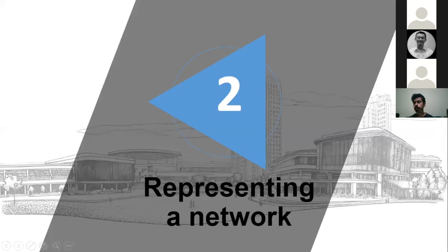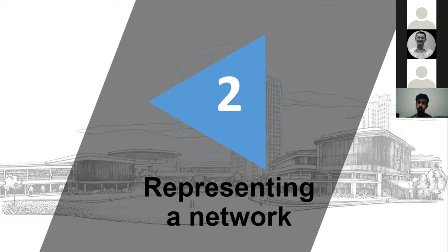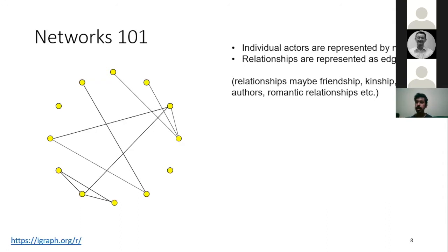Now let me quickly run through some basics of how you think about networks as a data structure and how you create your first network. Very simply put, a network is a collection of nodes and links. Nodes could be many things: a popular understanding is a network of individuals or people, but you can also think of nodes as products, entities, organizations, countries, or train stations in a subway — all of these can be modeled as networks. Once you have the nodes, the relationships between them can capture different aspects — in a social network, links could be friendship, familial ties, kinship, romantic relationships, or academic collaborations.